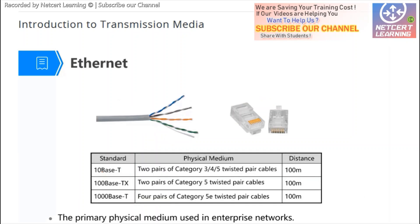Now we go to twisted pair cable. Twisted pair cable is widely used today. In the twisted pair cable there are eight lines, and each two of them are twisted together. There are two types: one is called STP and another is called UTP. STP means shielded, and UTP means unshielded. The shielded cable is covered by an aluminum foil, making it more robust against magnetic interference.